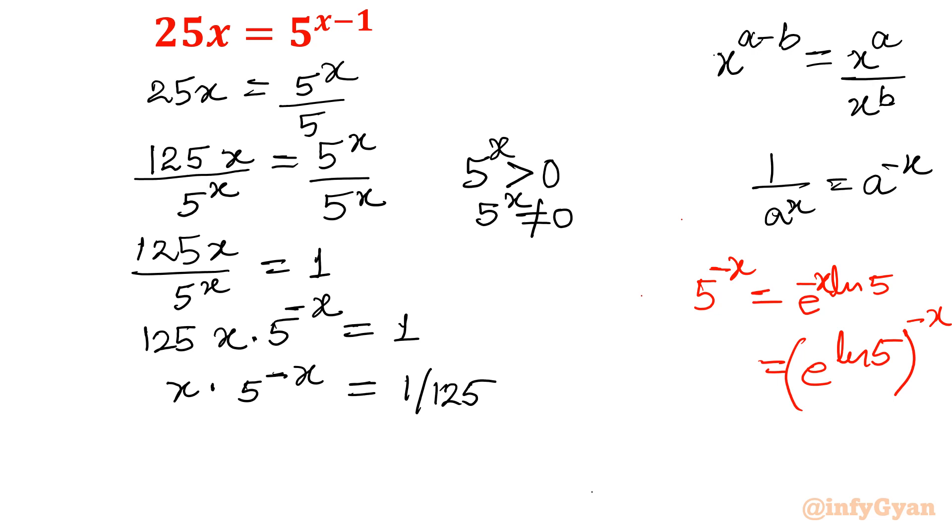So once you will take the product of the exponent, it will come out by a power b whole power c, that is equal to a power bc. So I will write this term as e raised to the power minus x ln 5. This part is done. x equal to 1 over 125.